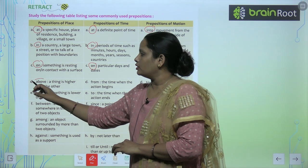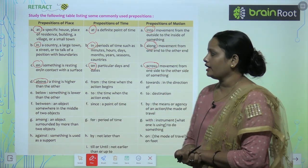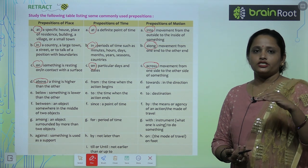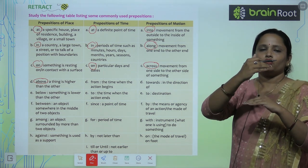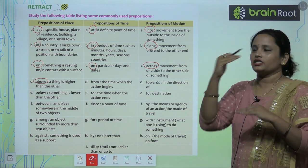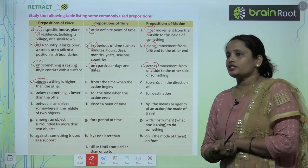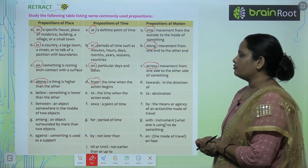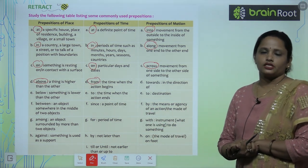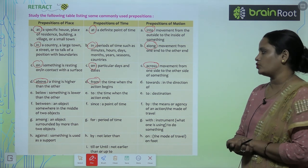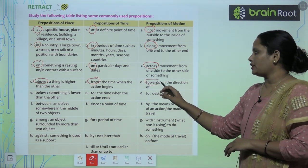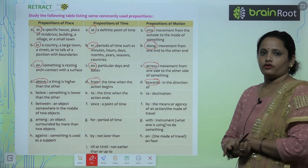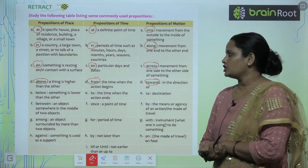Next is 'above' — a thing is higher than the other. 'From' indicates time — the time when the action begins, time kab se action shuru hua. 'Towards' indicates direction — in a direction, kisi cheez ki taraf jaana.